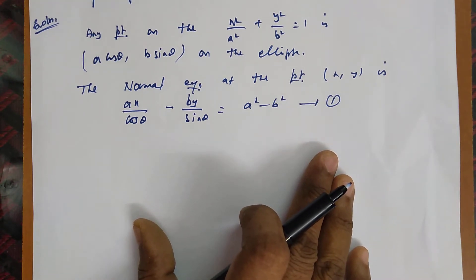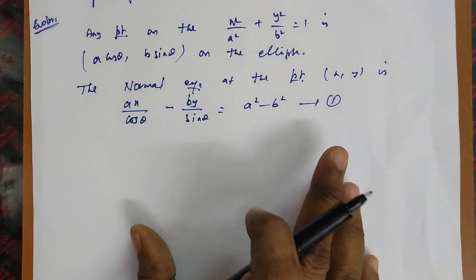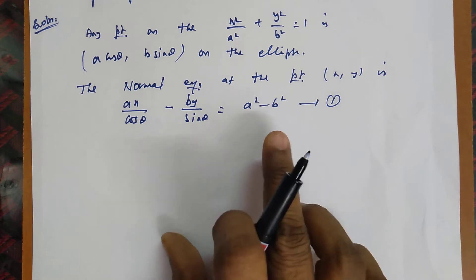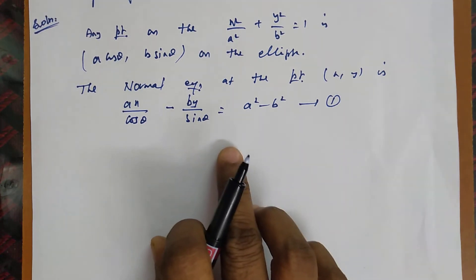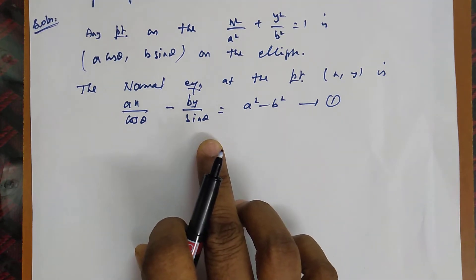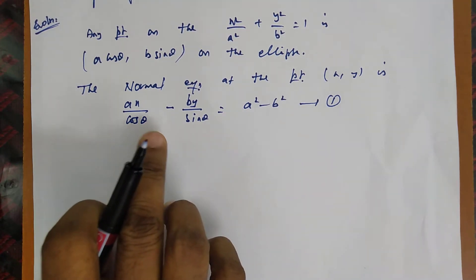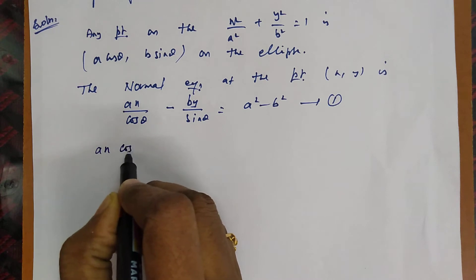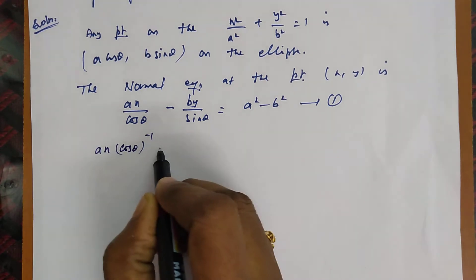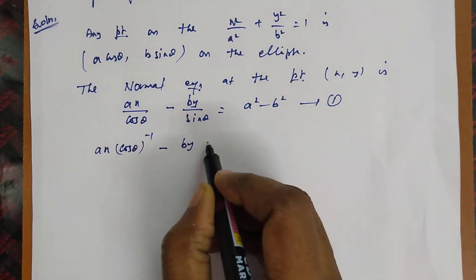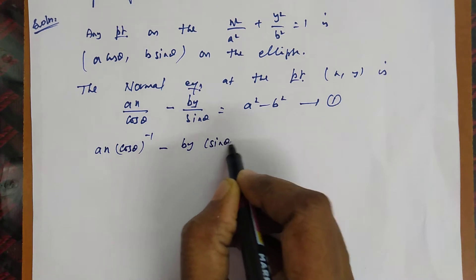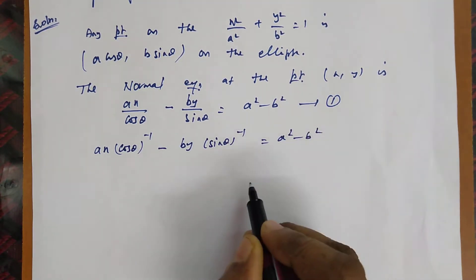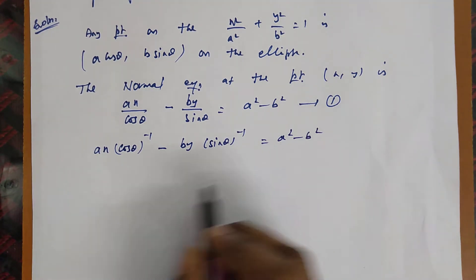For finding the envelope, two methods are available: finding a quadratic equation with the parameter, or differentiating with respect to the parameter. We are going to use method 2. The parameter here is θ, so we rewrite the normal equation as: ax · cosθ⁻¹ − by · sinθ⁻¹ = a² − b².